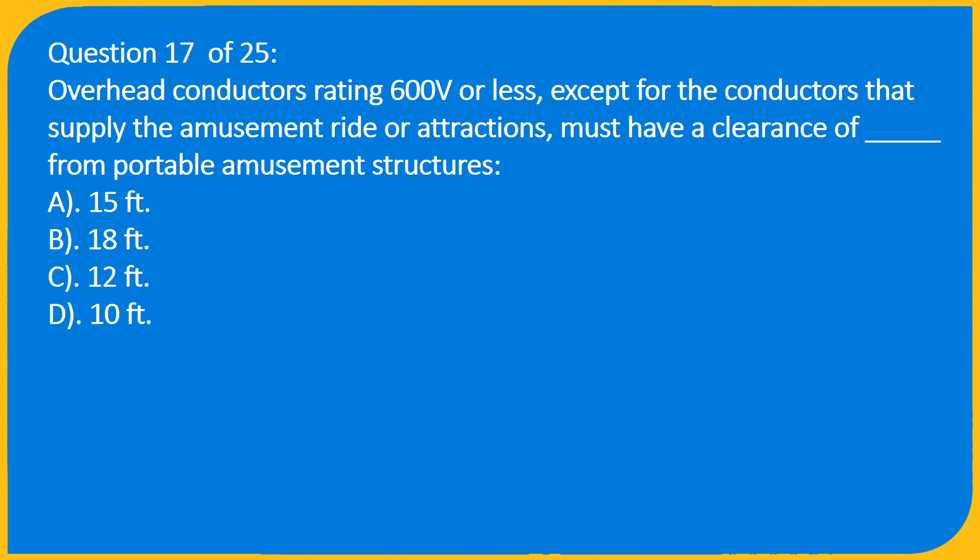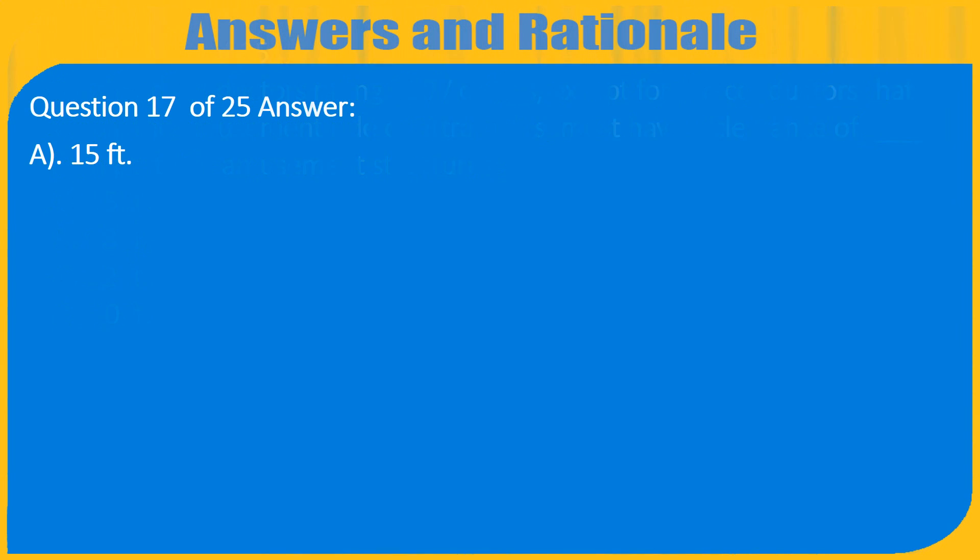Question 17 of 25: Overhead conductors rated 600 volts or less, except for conductors that supply amusement rides or attractions, must have a clearance of how many feet from portable amusement structures? A. 15 feet, B. 18 feet, C. 12 feet, D. 10 feet. Answer: A. 15 feet.